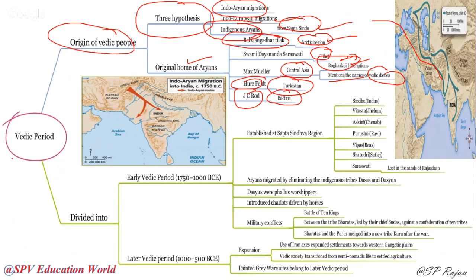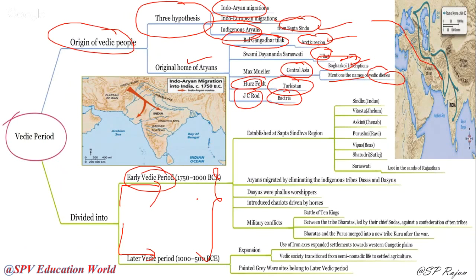The Vedic age is further divided into Early Vedic age and Later Vedic age. The Early Vedic age is from 2000 to 1500 BC, and the Later Vedic age is 1200 BC onwards. There are major changes in these two eras, so be careful and understand both divisions — what are all the differences and how life existed during these two Vedic periods.